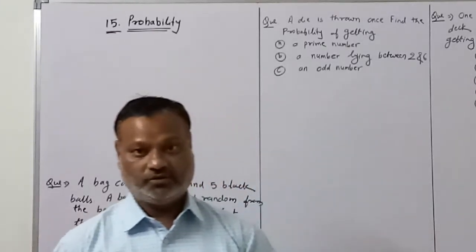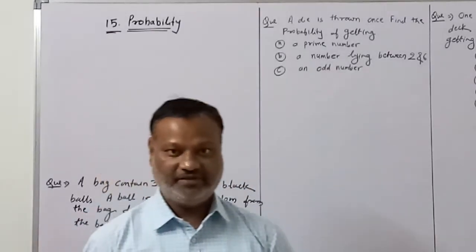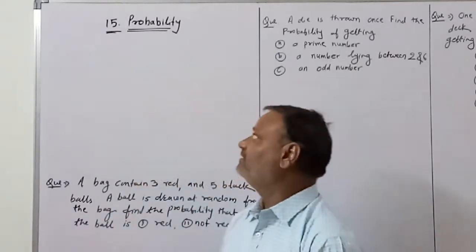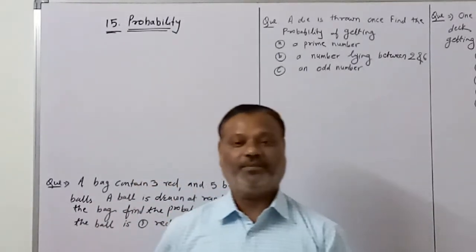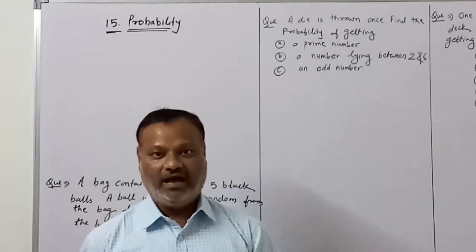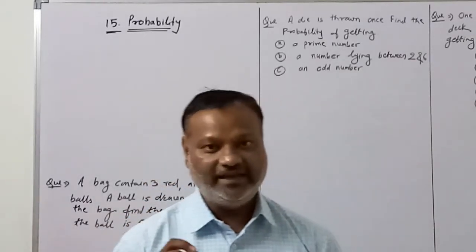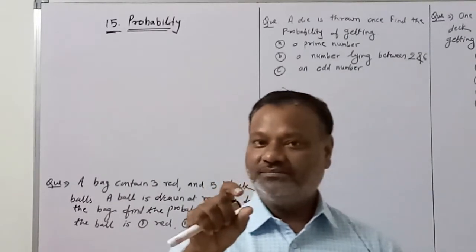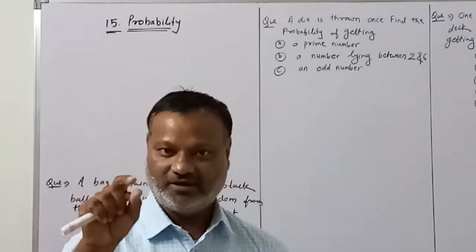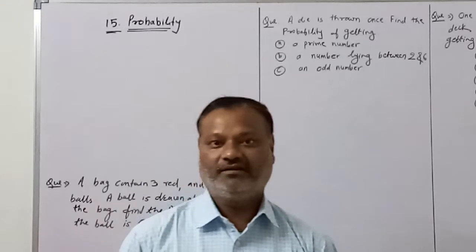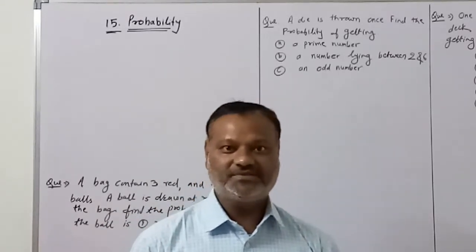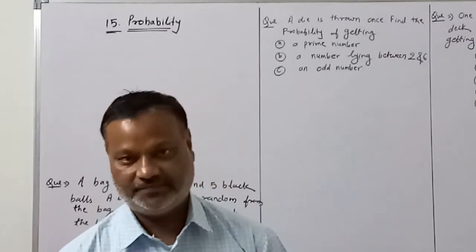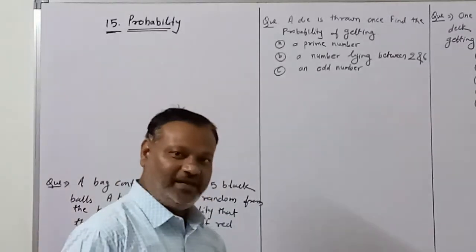Good morning students. In the previous video we already started lesson number 15 - Probability. Probability is the chance, and the probability of any event is the number of outcomes in the event divided by the total number of observations.